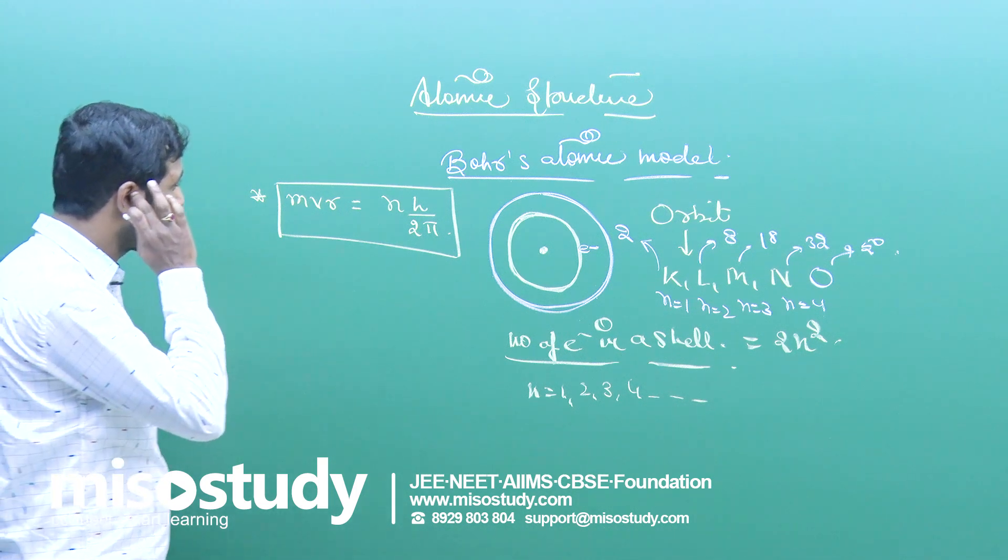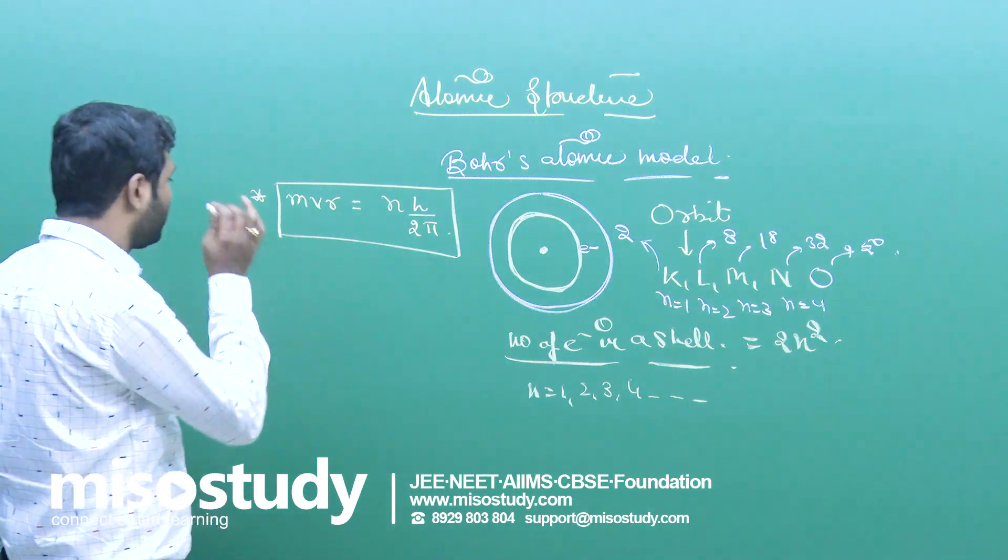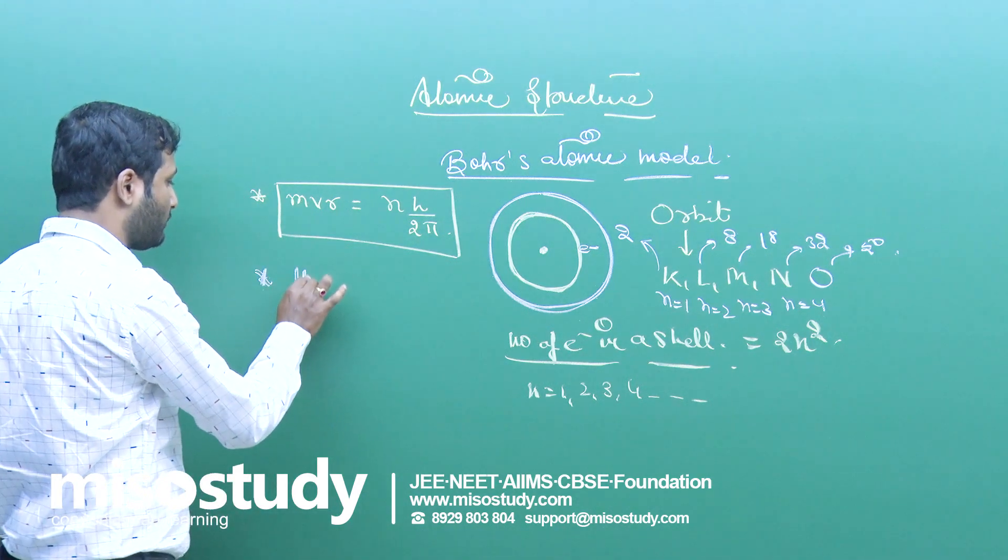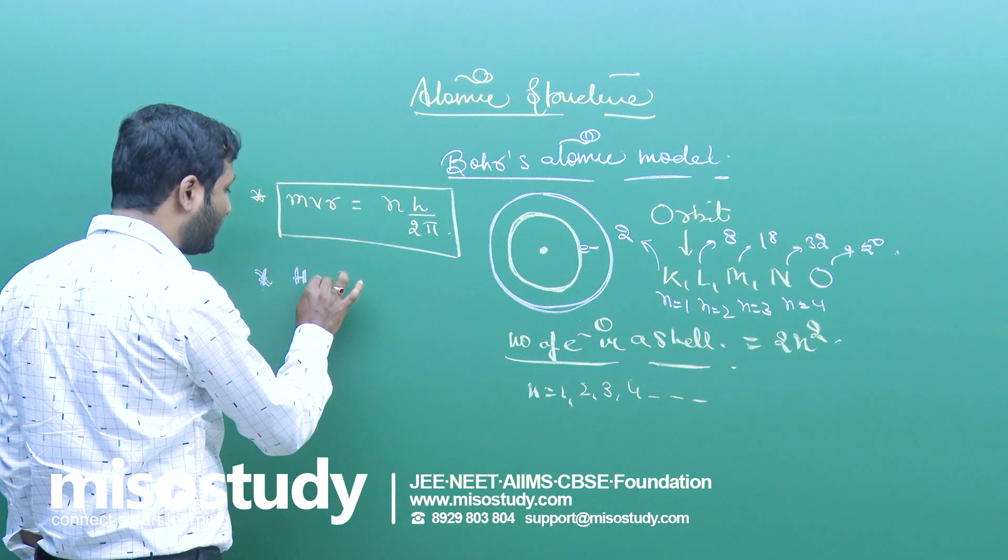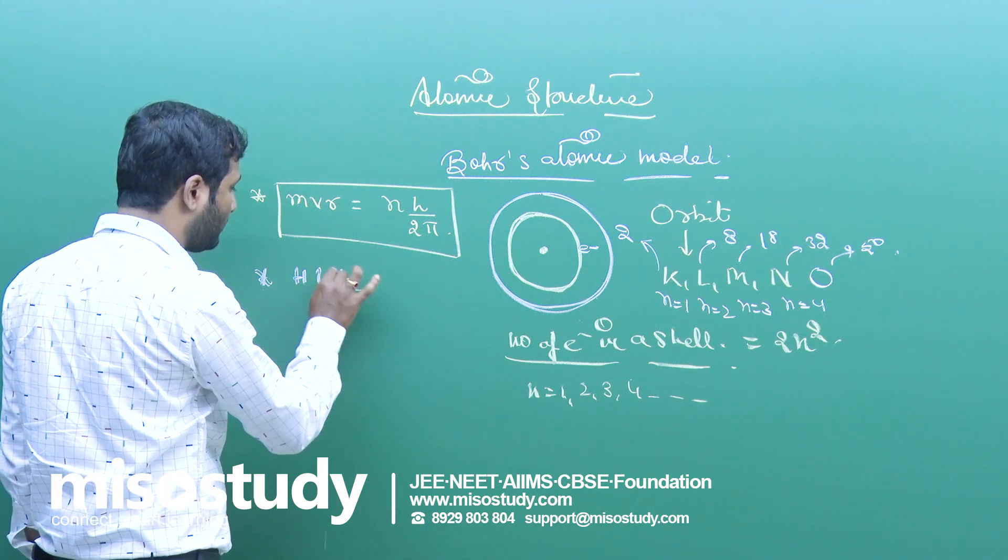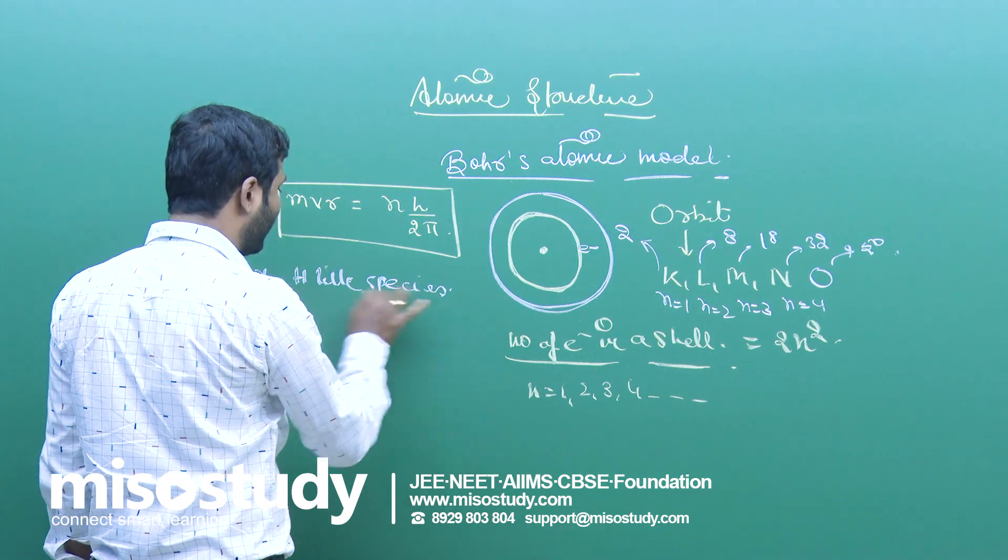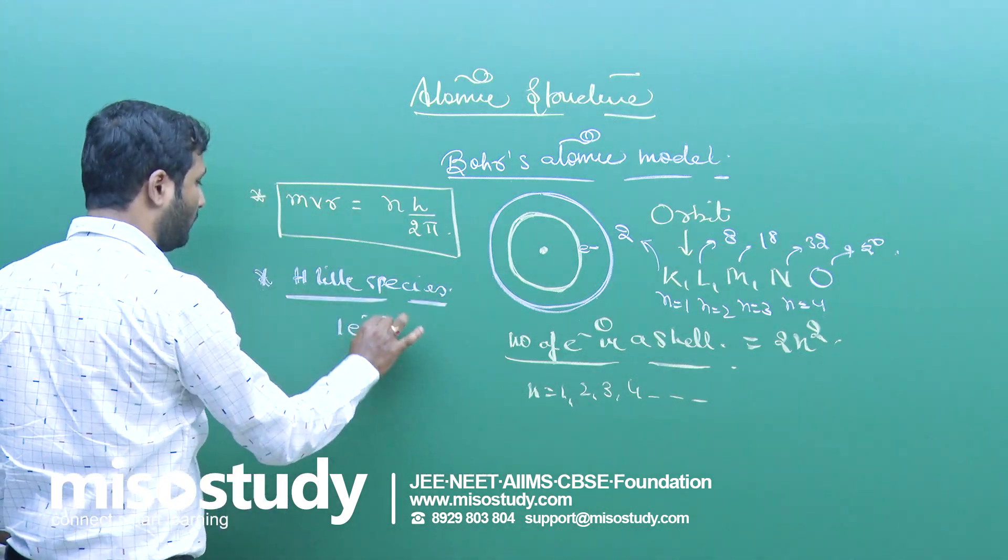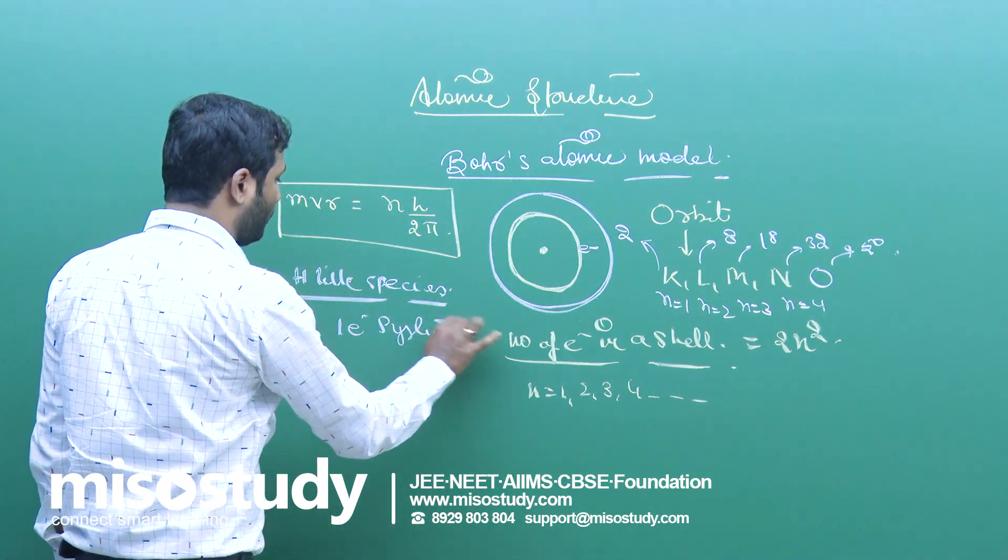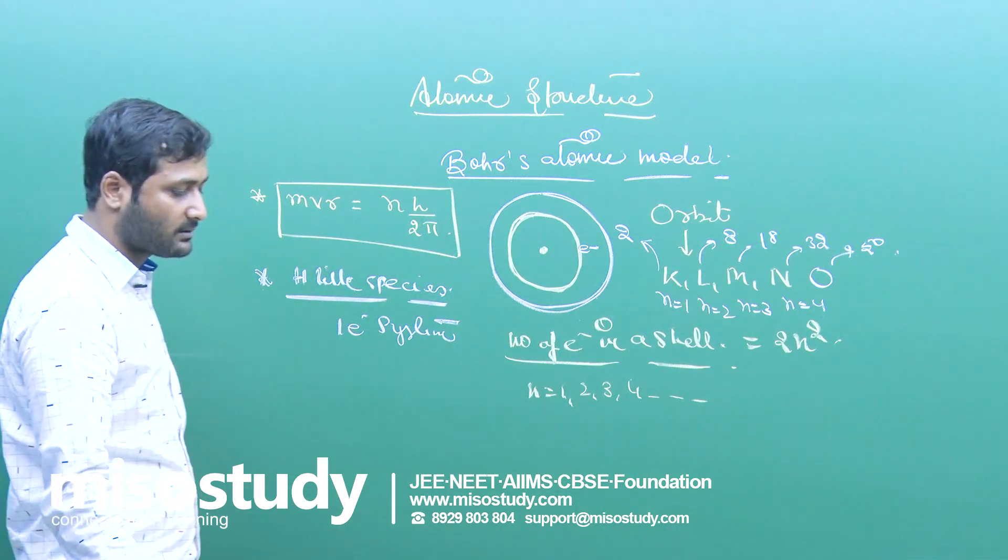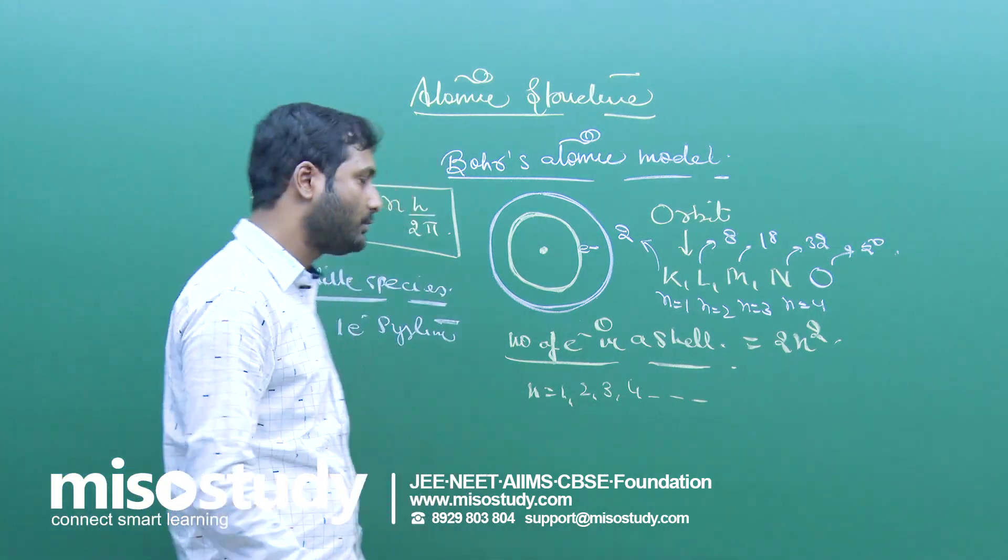These are the general concepts which we study. And Bohr's atomic model and the Bohr's spectrum, that is hydrogen atom spectrum or hydrogen-like species spectrum. One electron system. We know basically there are two types of spectrum: emission spectrum and absorption spectrum.